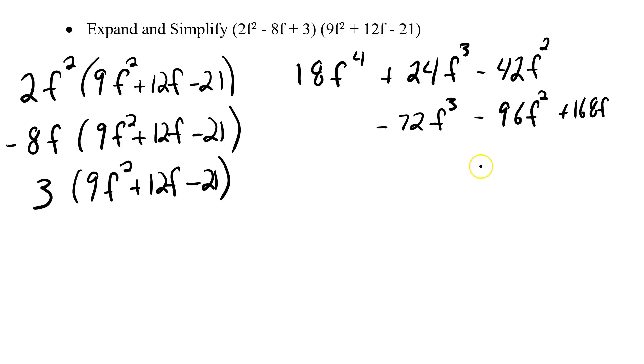And then let's go to our third set. 3 times 9f squared is positive 27f squared. So where are my f squareds? All the way over here. Positive 27f squared. 3 times 12f, that'll be positive 36f. And I'm going to rewrite that so it looks a little cleaner. 36f. And then I got 3 times negative 21 is minus 63.